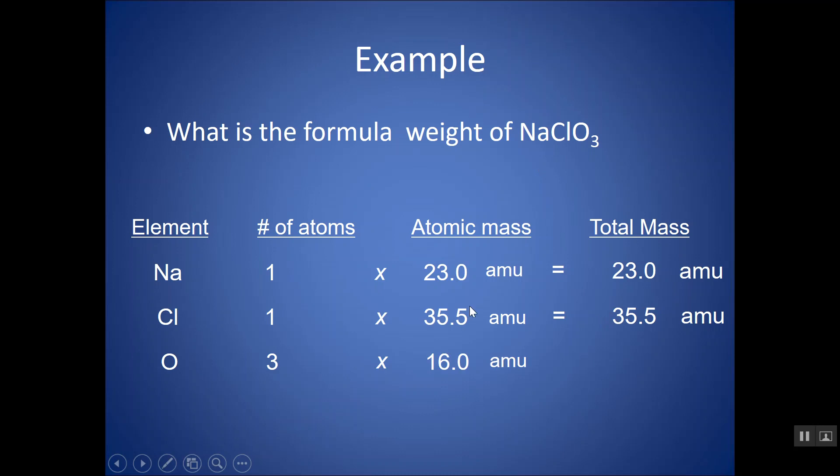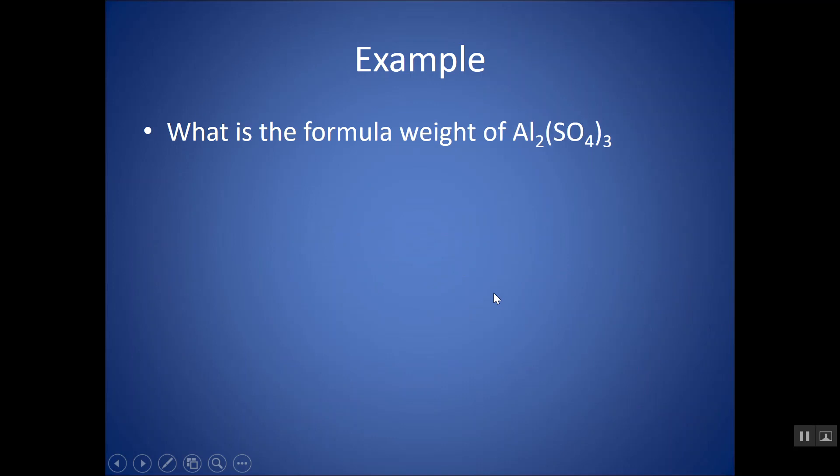Oxygen, there's three oxygens that each weighs 16 atomic mass units, so that is 48 AMUs of oxygen in this formula. I can sum up all of these masses and get that the formula mass or the formula weight is 106.5 atomic mass units. You don't have to show your work in this table all the time. You can do it right in your calculator. Take a moment and try this example.